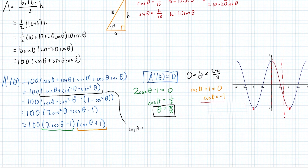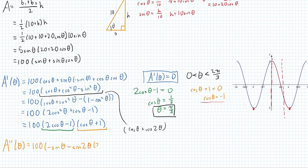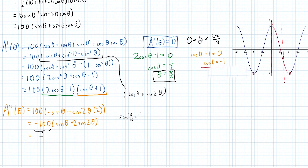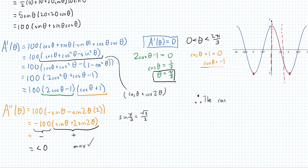To check if it's a maximum, we find the second derivative. Taking the first derivative and rewriting it using the double angle identity, the second derivative equals 100 times (derivative of cos is negative sine theta, plus derivative of cos 2theta is negative sine 2theta times 2 by chain rule). That equals negative 100 times (sine theta plus 2 sine 2theta). The negative 100 is always negative, and evaluating sine of pi over 3 gives root 3 over 2, which is positive — so the second derivative is less than zero, meaning it's concave down.